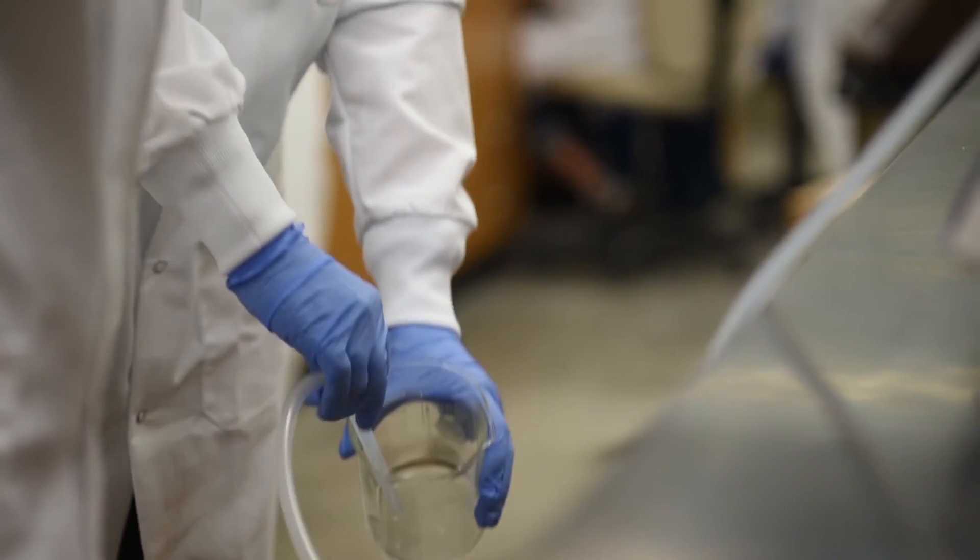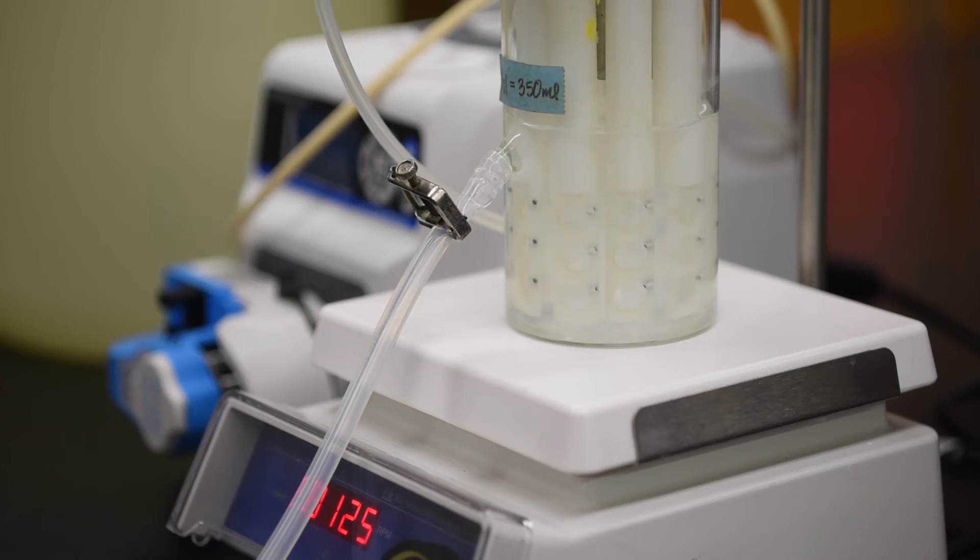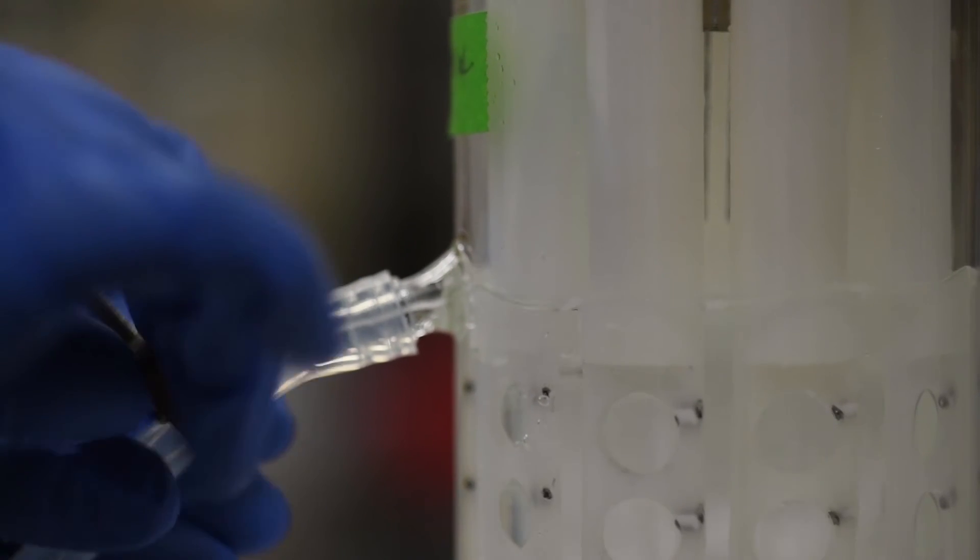Place the effluent tubing in a beaker. Set the stir plate to rotate at 125 RPM and remove clamp from the effluent tubing.